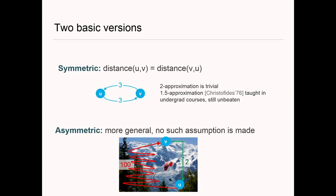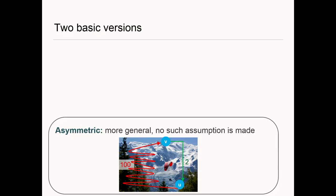There are two basic versions of the problem. In the symmetric version, distances are symmetric between any pair of vertices. Here it's quite easy to get a 2-approximation, and there's the celebrated 1.5-approximation by Christofides from 1976, taught in undergrad, that still has not been beaten — a huge open problem. We're interested in the asymmetric version, where distances are not symmetric — like climbing versus descending Mont Blanc.